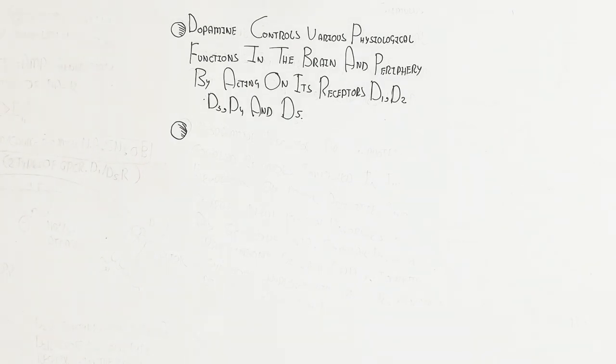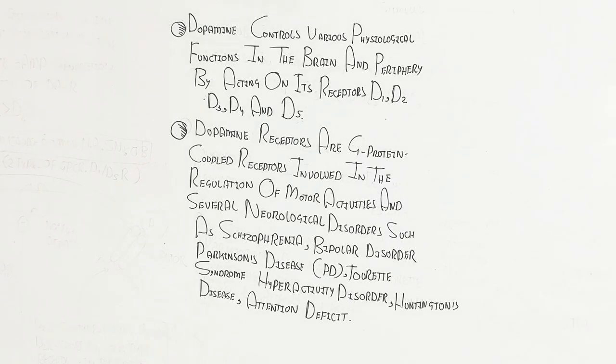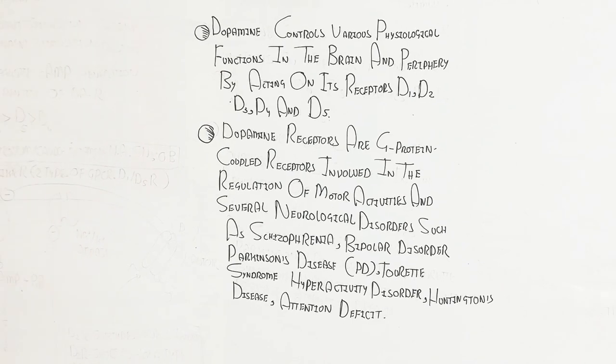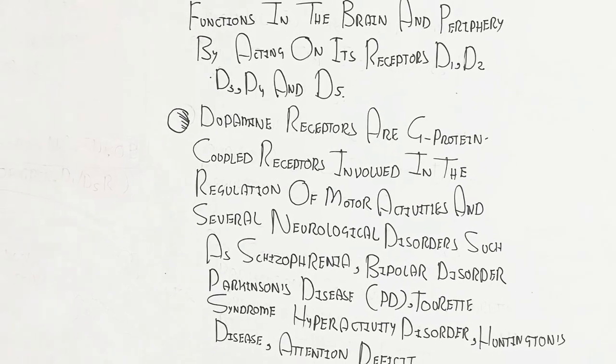Dopamine receptors are G-protein coupled receptors involved in the regulation of motor activities and several neurological disorders such as schizophrenia, bipolar disorder, Parkinson's disease, Tourette syndrome, hyperactivity and attention deficit disorder, and Huntington's disease.